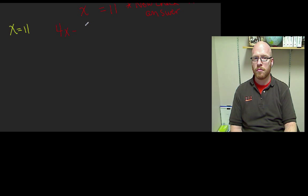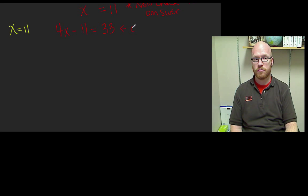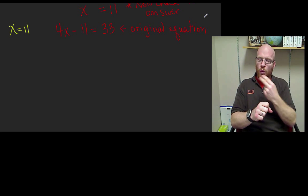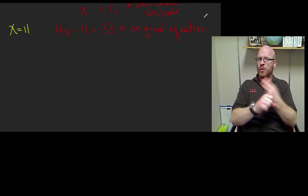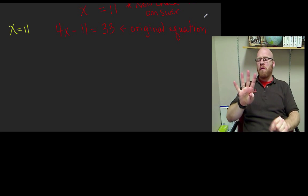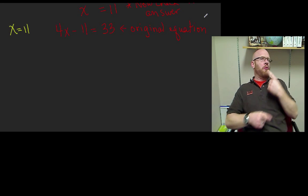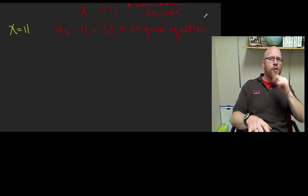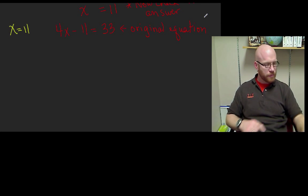x equals 11. Within the check, or checking our equations, you have to go back to the original equation. You can't use any of your subsequent work. For example, 4x equals 44, divide by 4, it's 11 — no, you can't do that. You can still be mistaken. You have to go back to your original equation and substitute your answer in for the variable.